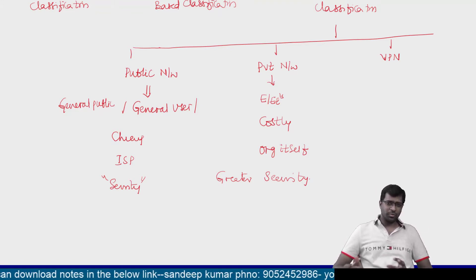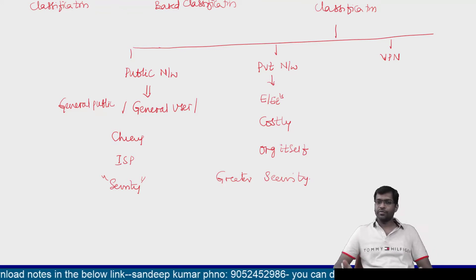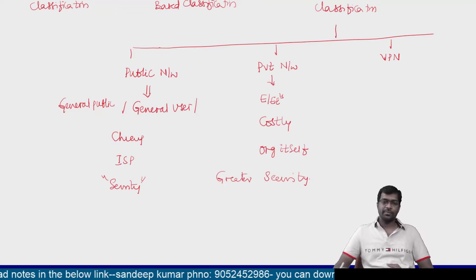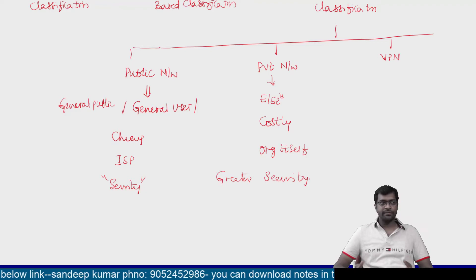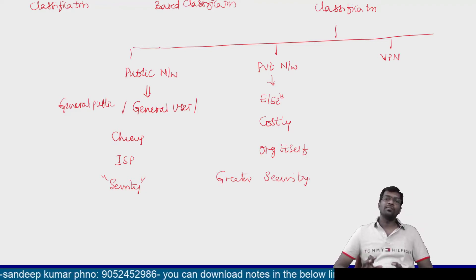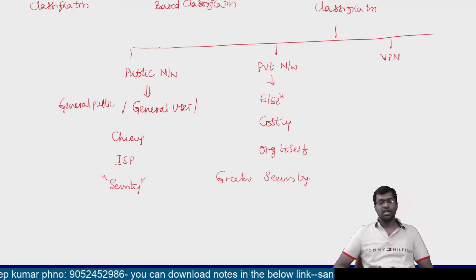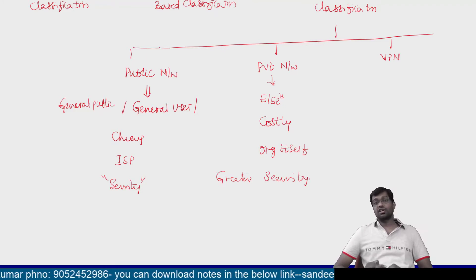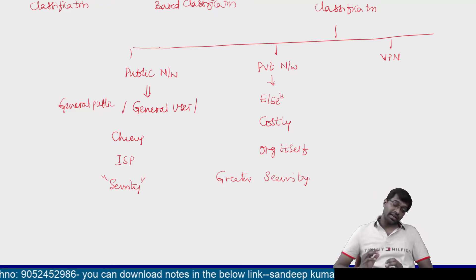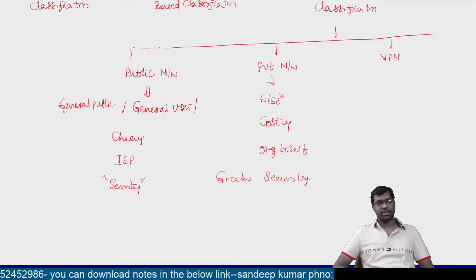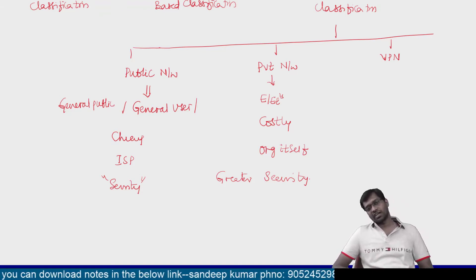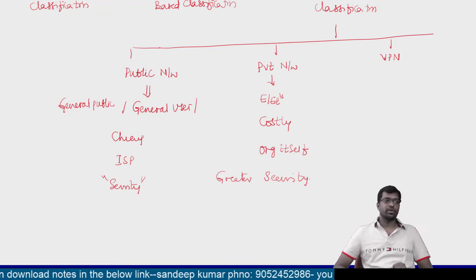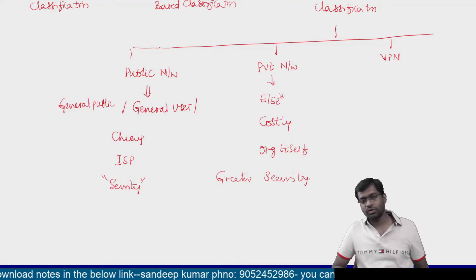What is the difference between a public network and a private network? A public network can be accessed by any person, whereas a private network can be accessed only by the employees of that particular organization. Private networks are more costly and offer greater security compared to public networks.